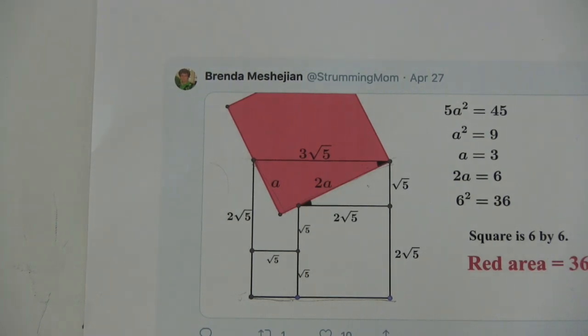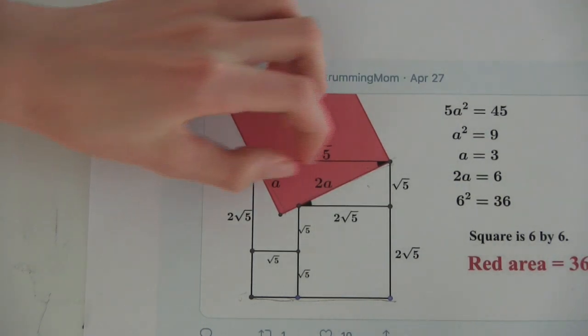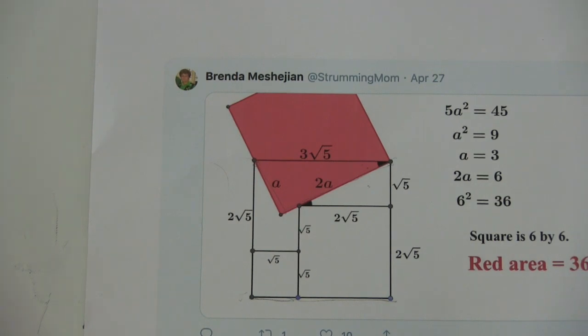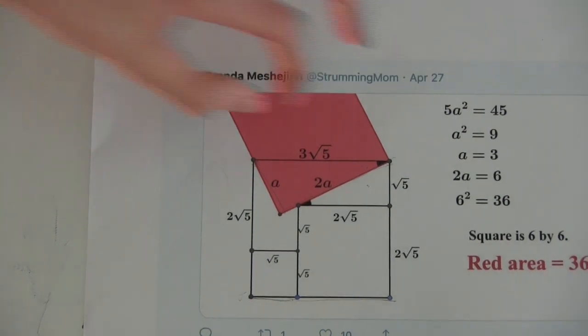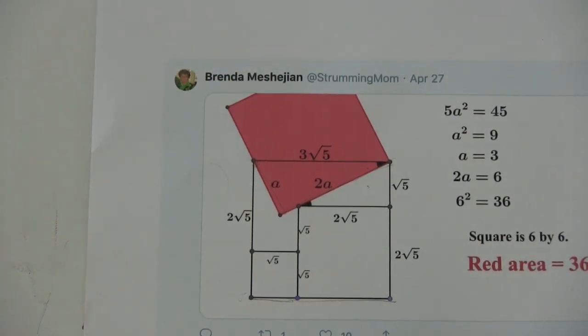And so the Pythagorean Theorem says that a squared plus 2a squared, which would be 4a squared, or total 5a squared, is 3 root 5 squared, which is 5 times 9, 45.